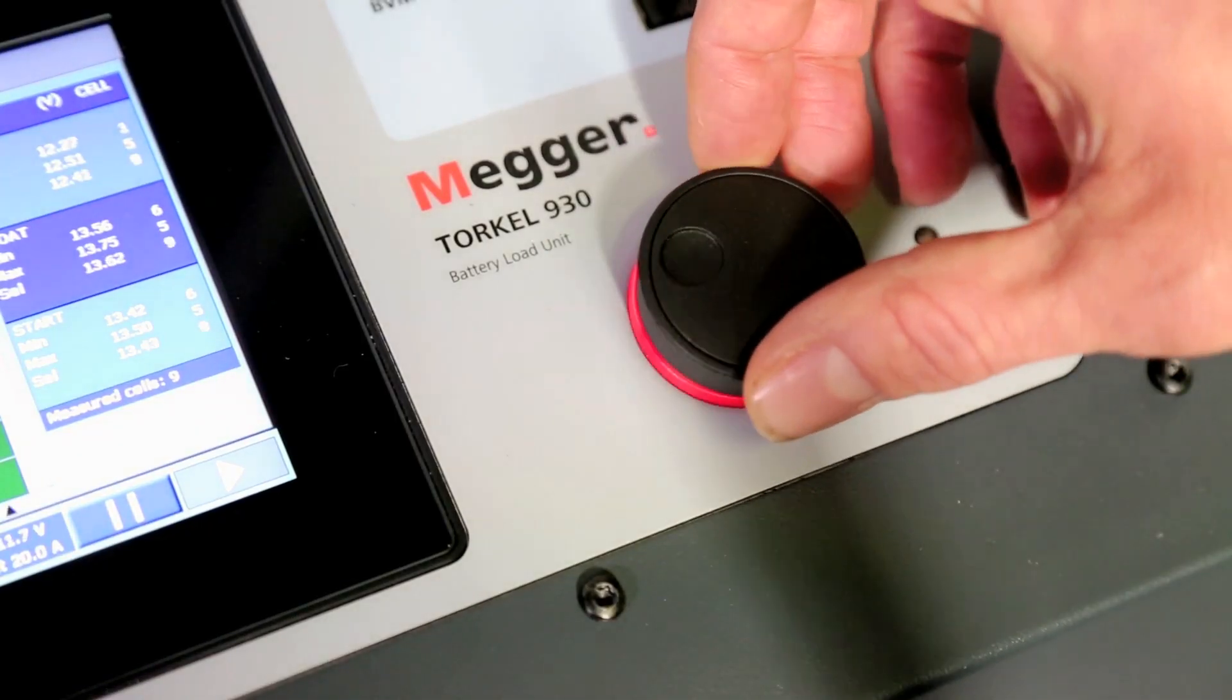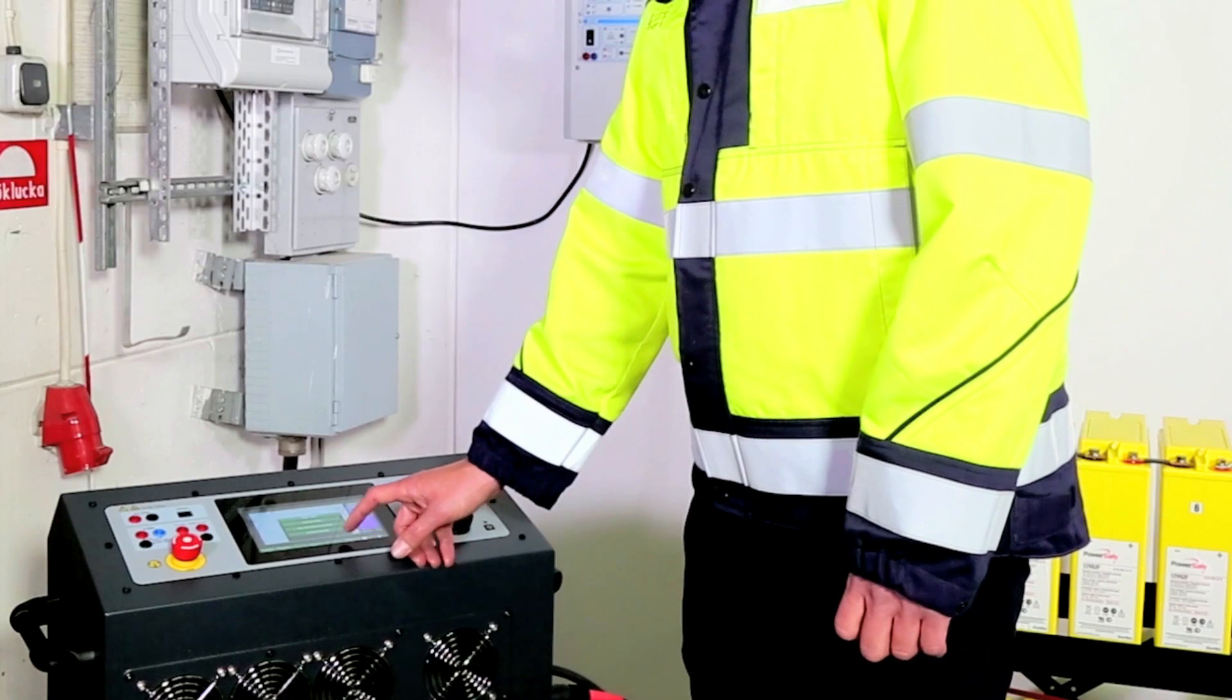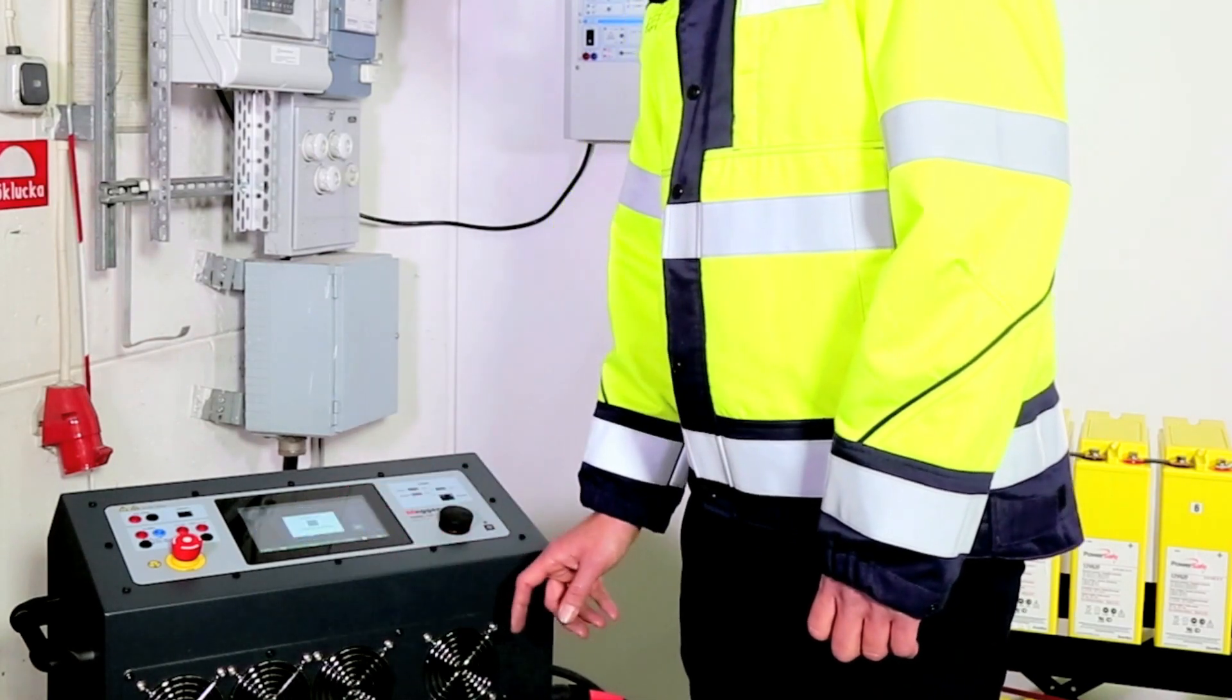This means shorter testing times, and since tests can be run while the battery is still in service, Torkel 900 ultimately reduces outage times.